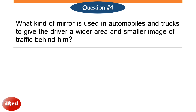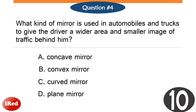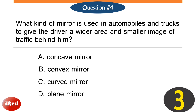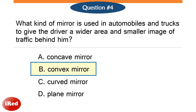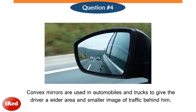Number four: what kind of mirror is used in automobiles and trucks to give the driver a wider area and a smaller image of traffic behind him? The correct answer is letter B: convex mirror. Convex mirrors are used in automobiles and trucks to give the driver a wider area and smaller image of traffic behind him.